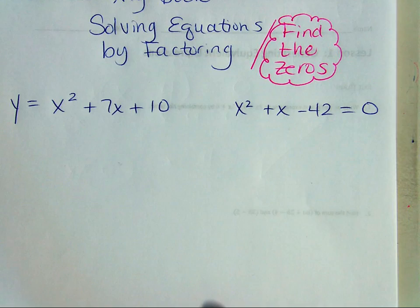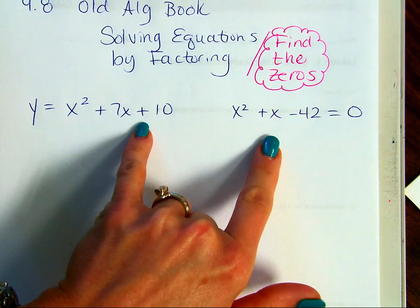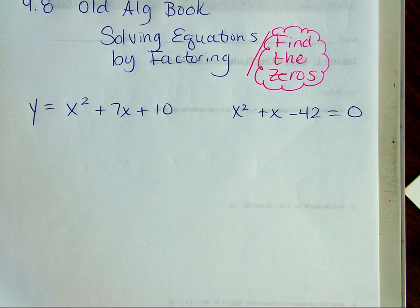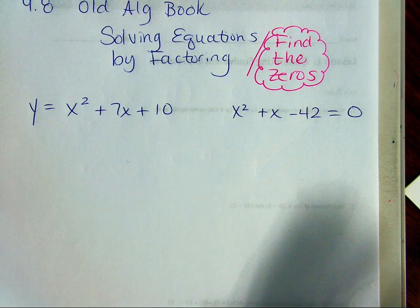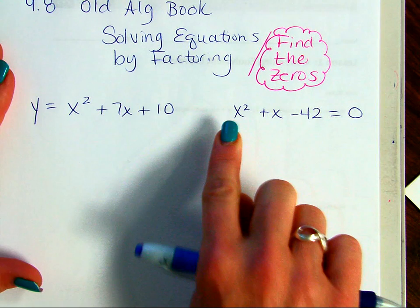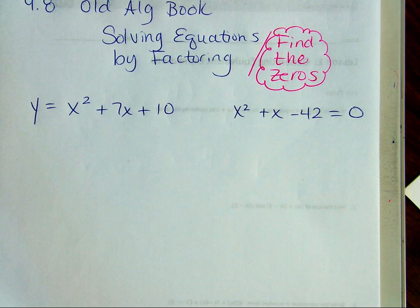Remember a while ago, our book factors these problems in after each section. The old book does it as a separate section — I didn't want to throw too much at you at once. Remember me giving you problems before and saying, just kind of ignore the equal 0? I used them for you to just practice the factoring part.